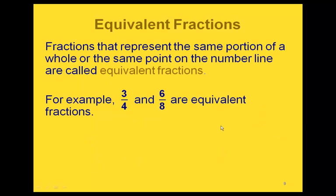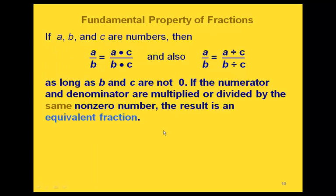If two fractions represent the same part of a whole, or are the same point on the number line, they're called equivalent fractions. So three-fourths and six-eighths are equivalent fractions. The fundamental property of fractions says that two fractions are equal to each other if you either multiply both the numerator and the denominator by the same number, or if you divide the numerator and denominator by the same number.